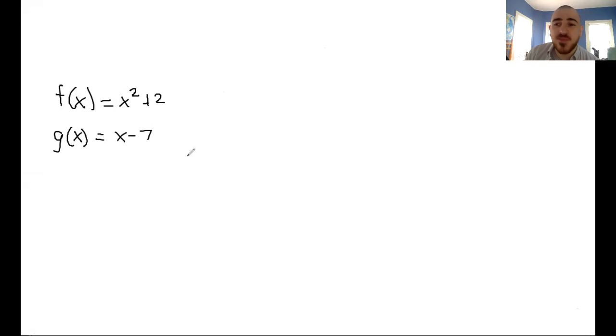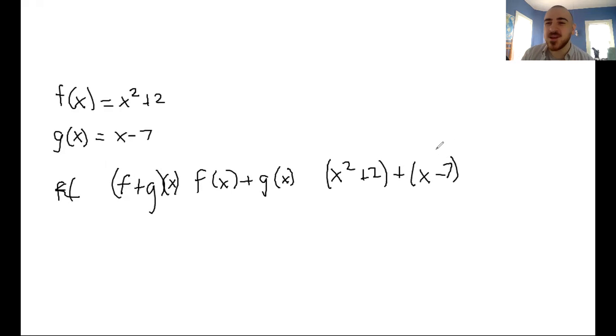You can do tons of things with these functions. If you did f plus g of x, this would just be the same as f of x plus g of x. So then you just simply add these two functions together: x squared plus 2 plus x minus 7. Notice how I'm using these parentheses to keep everything together. You can add these two together: x squared plus x minus 5.